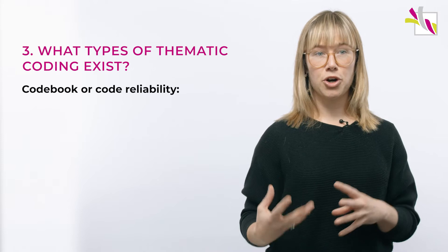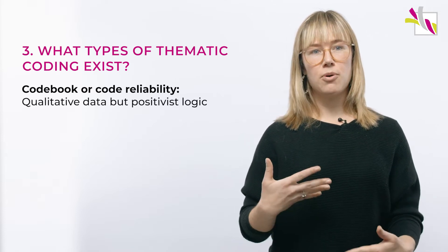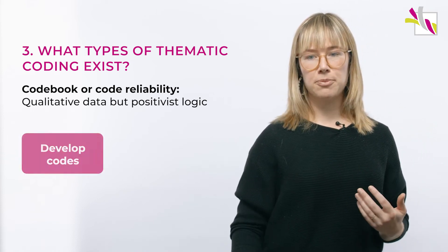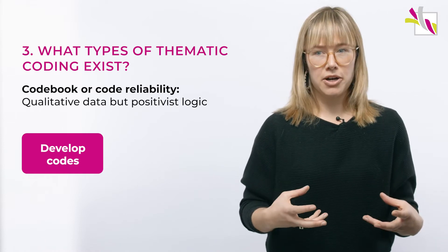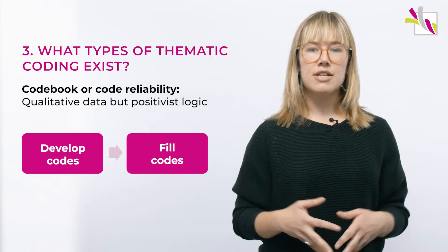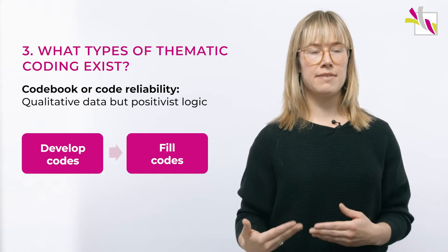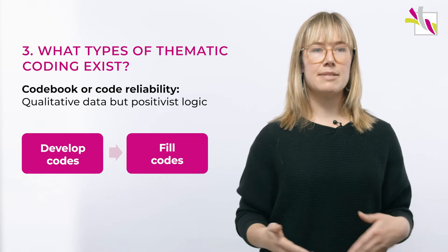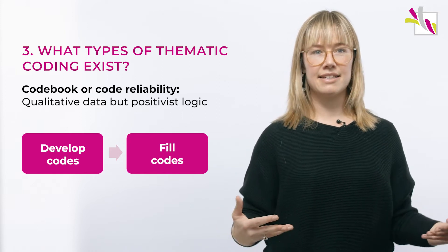To start, I'm going to talk about codebook or codebook reliability coding. This is using qualitative data but in a more positivist logic. What we're doing is developing a codebook — we go to the data and fill those codes with the data we've collected. As researchers, we're trying to remove the potential for subjectivity or researcher bias in code development, hence this positivist logic. This is done through having multiple coders and specific coding descriptions, so that these codes can be used by any other researcher wanting to analyse this data using this codebook.